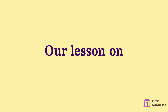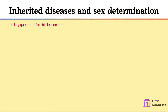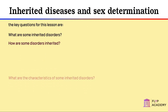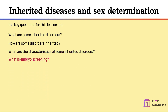Welcome to our lesson on inherited diseases and sex determination. The key questions for this lesson are: What are some inherited disorders? How are some disorders inherited? What are the characteristics of some inherited disorders? What is embryo screening? How is sex inherited?